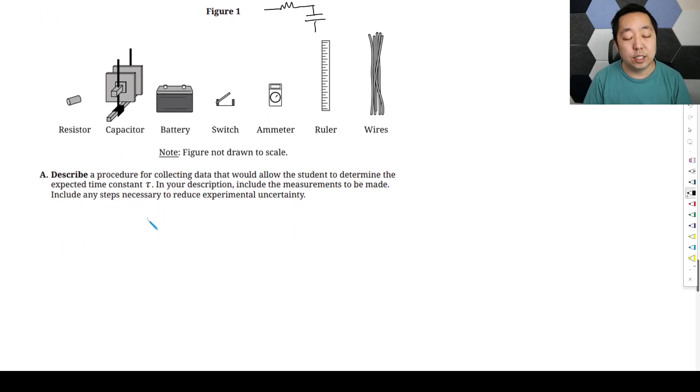The plates of the capacitor are square, and the separation between the plates is small compared to the dimension of the plate. So that's like the ideal parallel plate capacitor equation we'll use. Capacitor is initially uncharged. Assume that the dielectric constant of air is one. Describe a procedure for collecting data that would allow the student to determine the expected time constant. When you're going to put something in series, now we don't know the R, we don't know the C, we can't calculate those things. So your goal is not to be able to calculate R and C because you don't know those things.